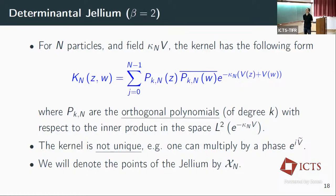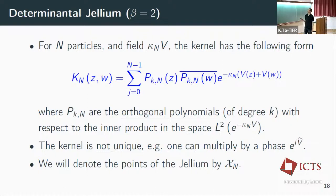For N particles, we have an explicit way to describe the kernel. We look at the orthogonal polynomials P_k with respect to the inner product in L², with weight e^{-kappa_N V}, where the external field is determined by the fixed probability measure. The kernel of the point process is then expressed as a sum of these orthogonal polynomials. One important technical point: the kernel is not unique — we can always add a phase — and correcting the phase is crucial for showing convergence.